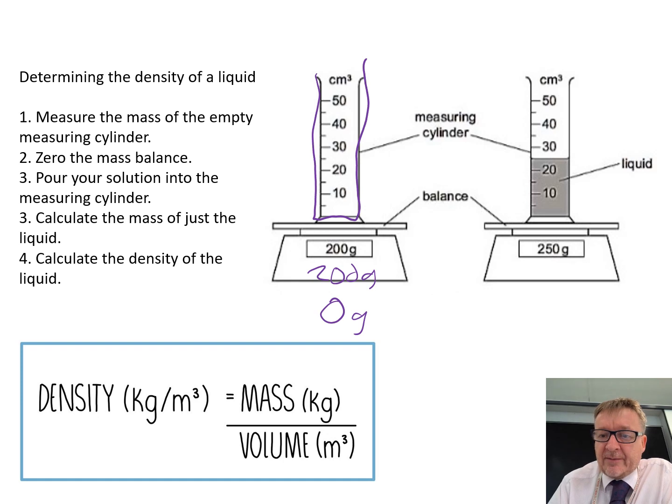Then you put your liquid in. There's your liquid in. You've got to know the difference between the two. So on this, it's then 250 grams, so there'd be 50 grams of liquid that's in there. If you've done it on zero, then the actual scale on there would say 50 grams. So zero the mass balance, pour your solution into the measuring cylinder, calculate the mass, and then calculate the density.